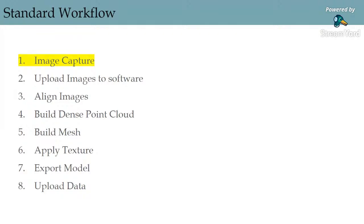The standard workflow used in any photogrammetry software starts with image capturing. Those images are uploaded into the software and undergo alignment in order to build a dense point cloud. From this point cloud, a mesh is rendered and then texture can be applied on top of it. Once the model is complete, you can export it in the file type of your choice and upload it online. Image capturing is one of the most important stages because it's manual, and creating errors at this stage affects the rest of the workflow.